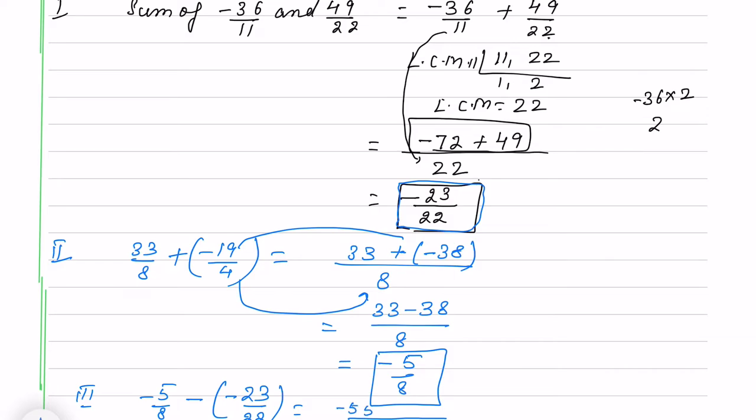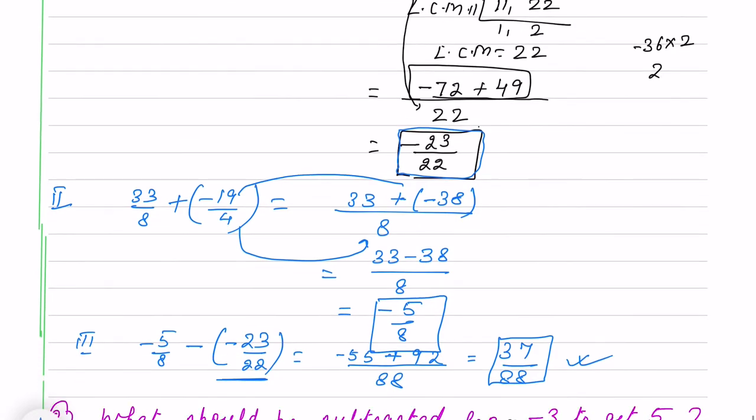So it is 5 times 11. Negative of negative of minus 23, that will be plus sign. LCM is this. We subtract 92 and 55. 55 is smaller, so sign will be positive. And 37 by 88 will be the answer.